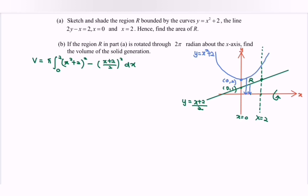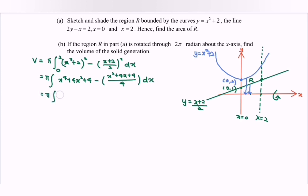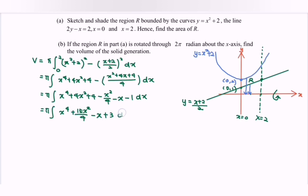Before integrating, expand and simplify. We get π ∫₀² [x⁴ + 4x² + 4 − (x² + 4x + 4)/4] dx, which simplifies to π ∫₀² [x⁴ + 15x²/4 − x + 3] dx.